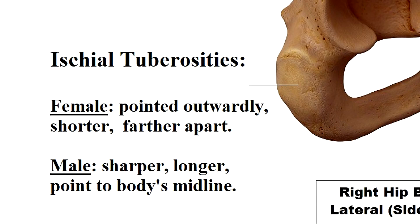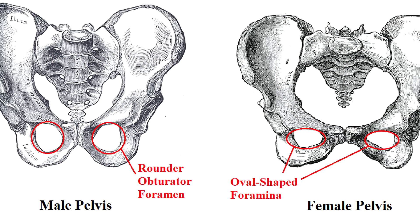Next, we have the ischial tuberosities on the pelvic outlet, which are those roughened bumps. These are going to be farther apart, shorter, and pointed in an outward direction in the female pelvis, whereas on the male pelvis they're going to be sharper, longer, and they're going to point more toward the body's midline. Because the male pelvis is narrower and taller, the obturator foramina — those huge hole areas here — have more of a rounded look, while the female pelvis in contrast is going to have more of an oval shape that kind of looks like a goose egg.